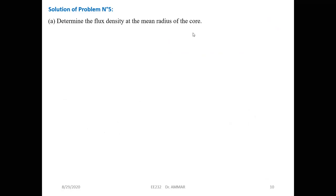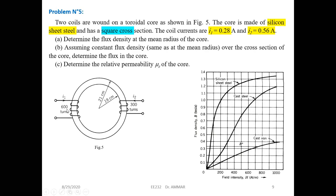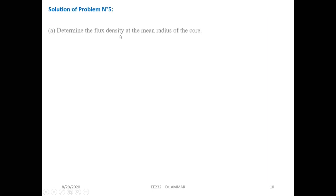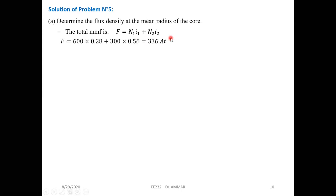First, we determine the flux density at the mean radius using the total MMF expression. From the figure, we have two coils, two power sources, and two currents. The total MMF equals N1 times I1 plus N2 times I2, which is 600 times 0.28 plus 300 times 0.56. The total MMF equals 336 ampere-turns.